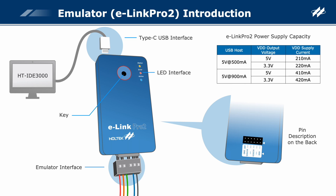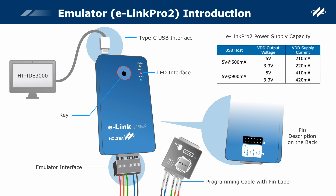When the emulation and debugging function is used, only four lines are required for connection: VDD, VSS, OCDSCK, and OCDSDA. A connection cable (12-pin to 5-pin) has been equipped before delivery, which has a mistake-proof mechanism and contains pin labels for convenient connection.